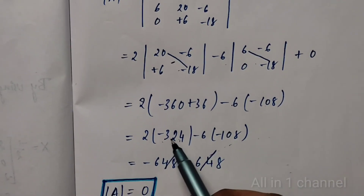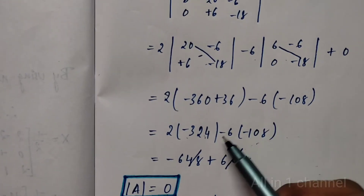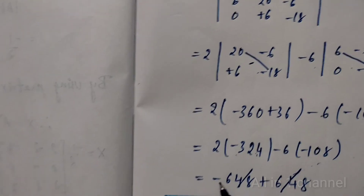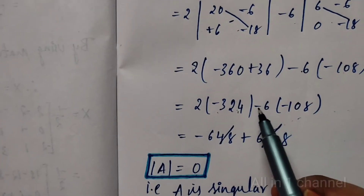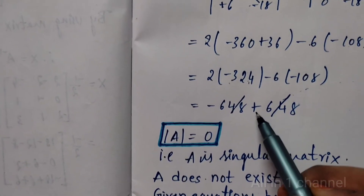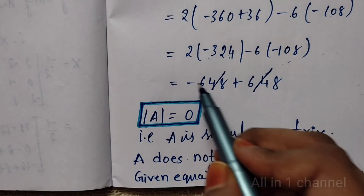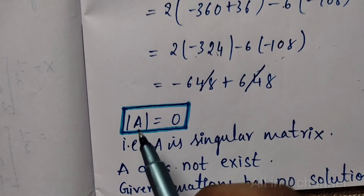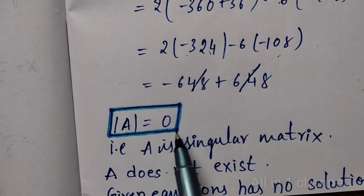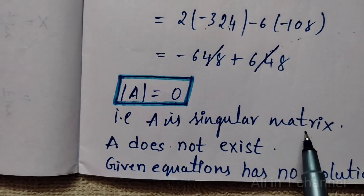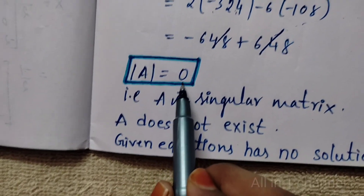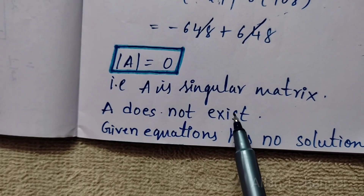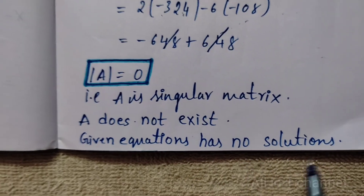Continuing: 2 times (minus 324) minus 6 times (minus 108) equals minus 648 plus 648 equals 0. Therefore det(A) equals 0, which means A is a singular matrix. Since A is singular, A inverse does not exist. Therefore the given system of equations has no solution.